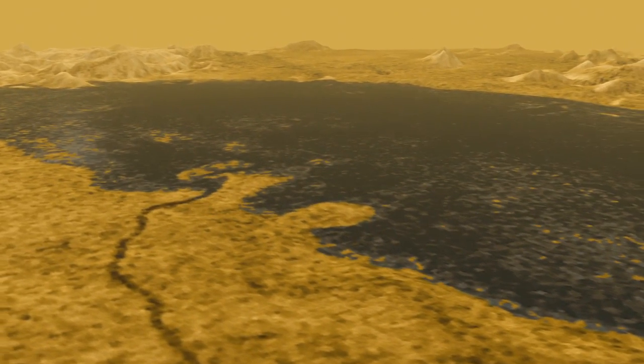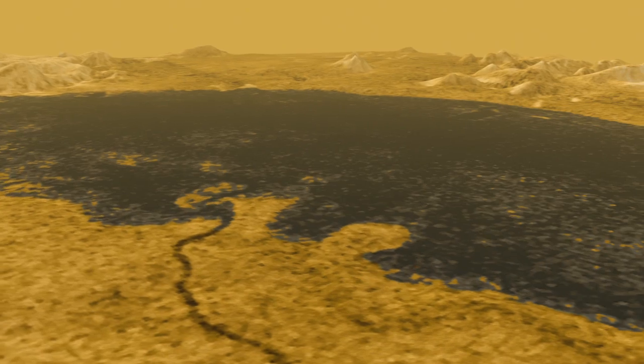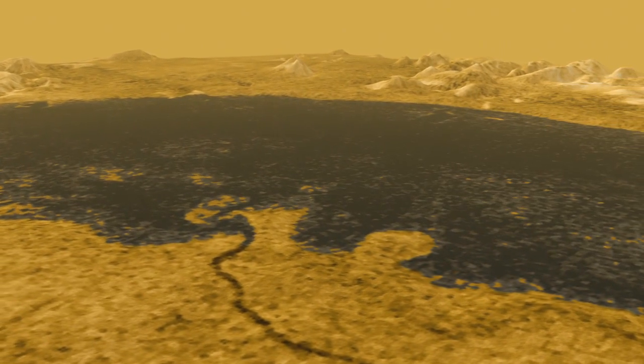Ontario's shore is surprisingly like earthly lake shores. Pretty amazing to find something this earth-like 800 million miles away.